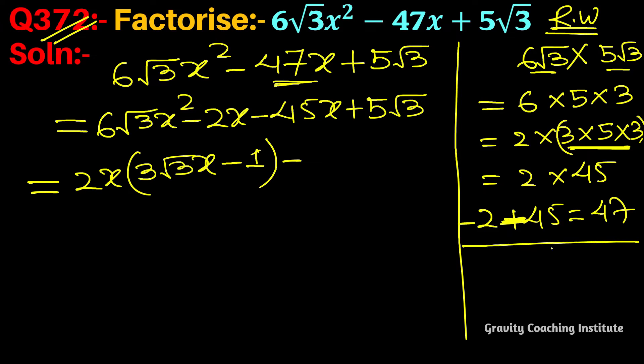45 we can write as 5 × 9, and 9 is 3 × 3. We can write this as 3√3 × √3.